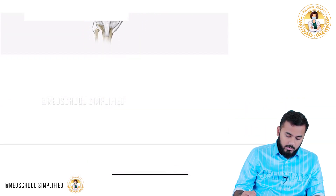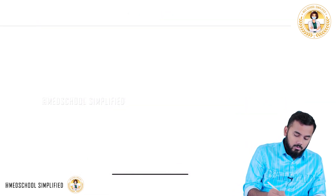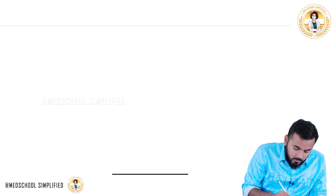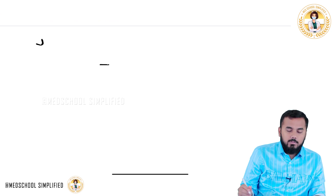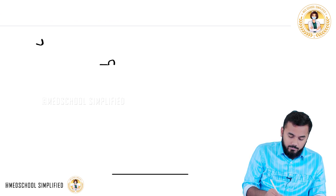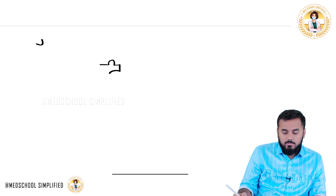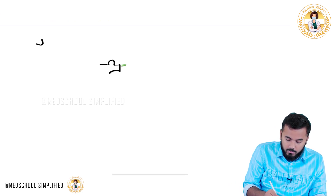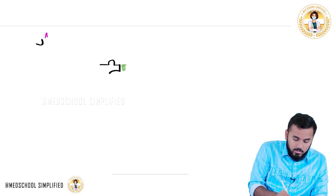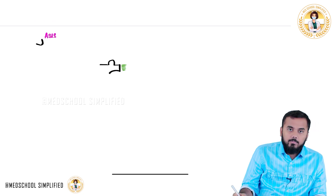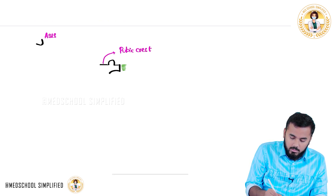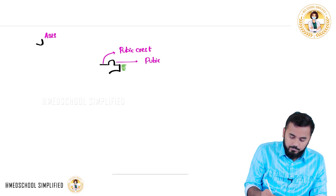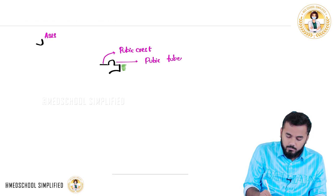Let me draw it first and then I will teach you. If you look at the femur bone, this is your anterior superior iliac spine, and here you have got your pubic crest, pubic tubercle, and then your pubic symphysis.